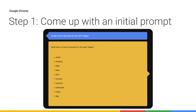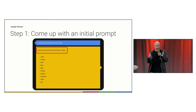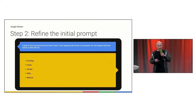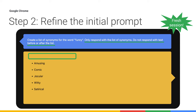When I run this against the model, it gives me a list of synonyms for the adjective happy. But there's a problem — the model tries to be helpful and adds a friendly opening phrase that isn't useful. I just want the pure list of synonyms. So I prompt engineer a bit and append: 'Only respond with the list of synonyms and don't respond with text before or after the list.' And it works — no more opening text, just the list.